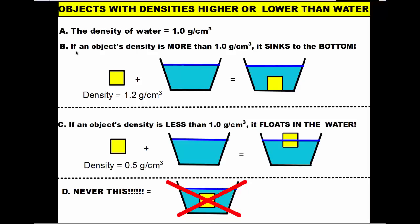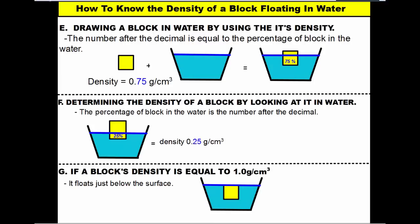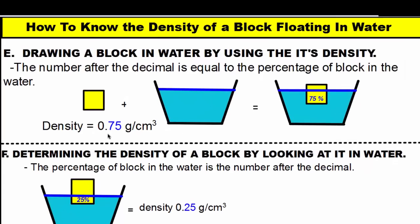The general rule: greater than 1 sinks to the bottom; less than 1 floats at the top. If a block floats, you need to determine how much of it is in the water. Here's the magic rule: the number after the decimal point in the density value equals the percentage of the block submerged in the water. For example, a density of 0.75 grams per cubic centimeter means 75% of the block is in the water.